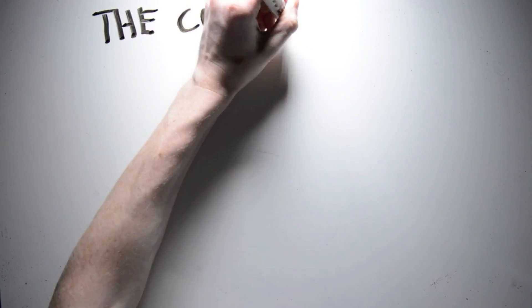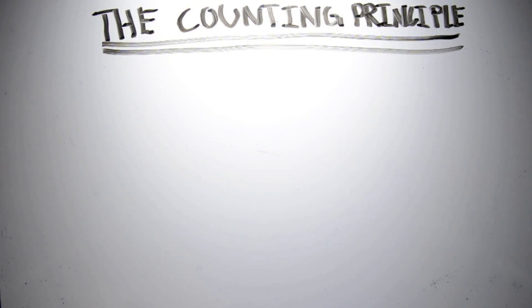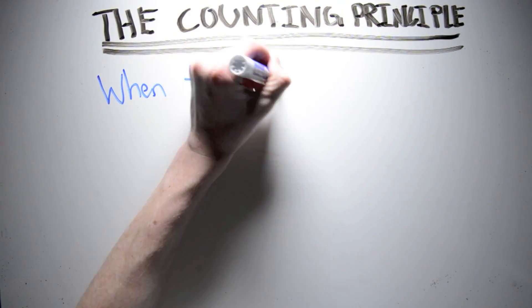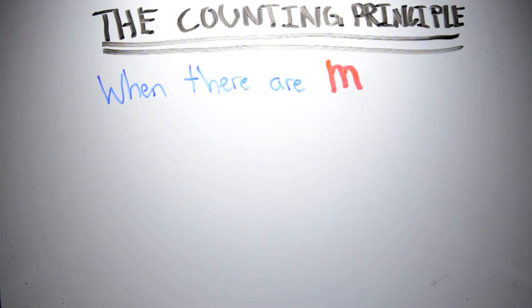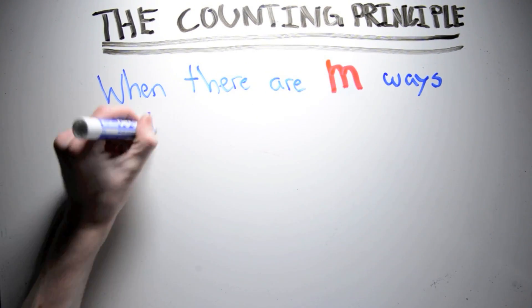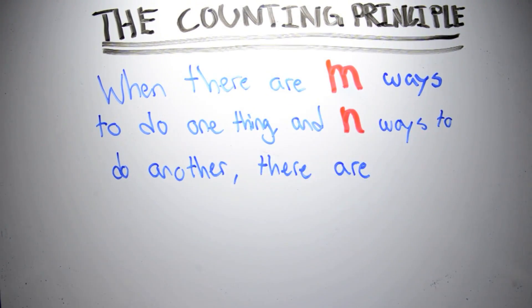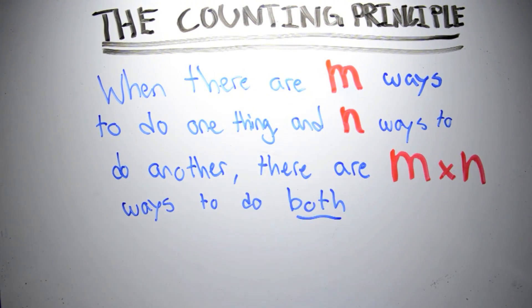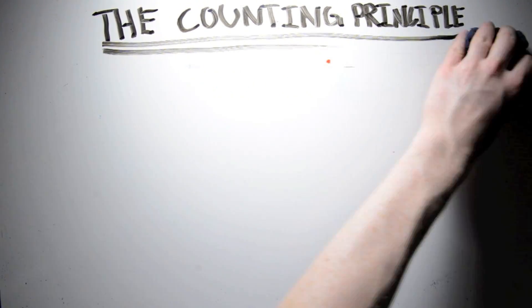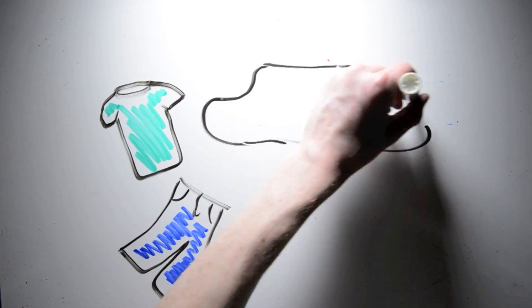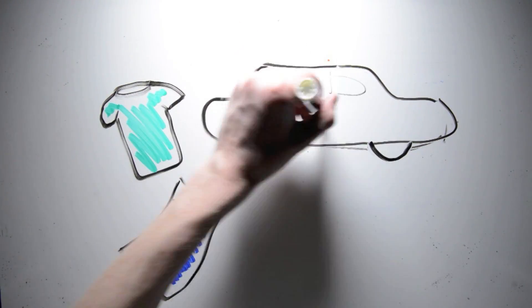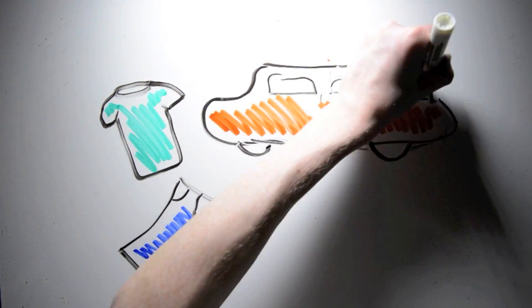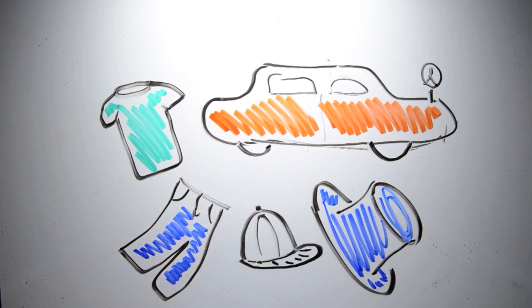By multiplying out all the possibilities like this, we're using something called the counting principle. As a general definition, the counting principle is this: when there are m ways of doing one thing, and n ways of doing another, there are m times n ways of doing both. This is true for pants and shirts, cars and brands, hats and colors, and everything else that has some kind of variety.